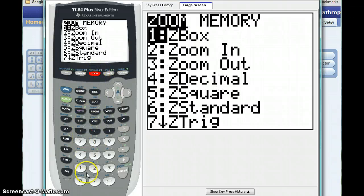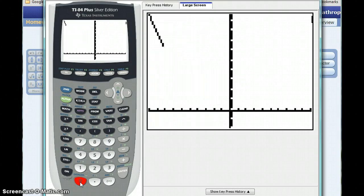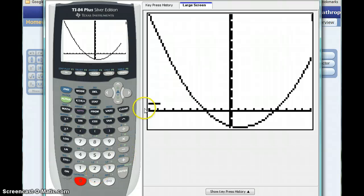...and then select that zoom screen, and then press 0 for that zoom fit option, we'll again get a window that's going from negative 10 to positive 10, and graphing our two functions.